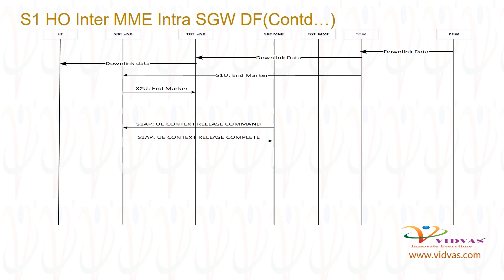SGW sends S1U end marker to source ENB. This is to inform source ENB that handover is complete, and source ENB does not need to forward data to target ENB anymore. Source ENB sends S2U end marker to target ENB, to inform target ENB that it can discard any packet that it may receive from source ENB on the X2U interface.